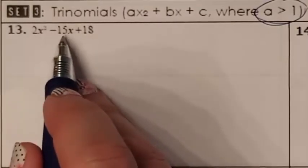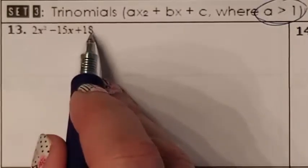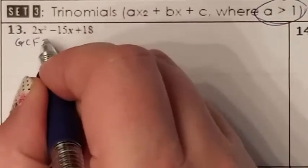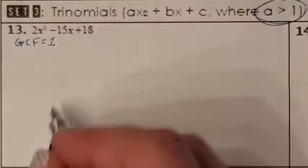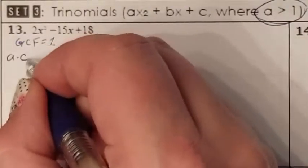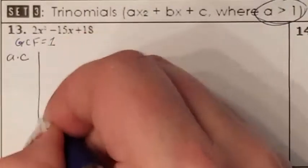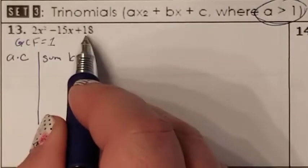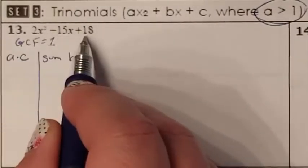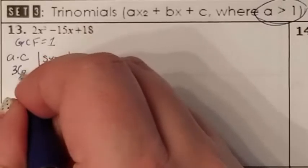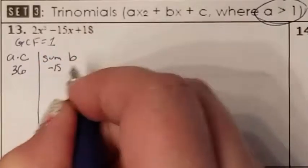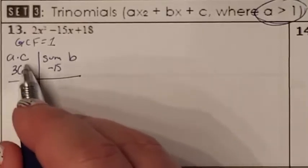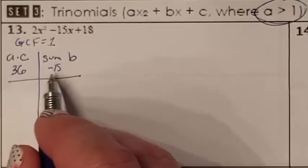Same thing — we always start with the GCF. I'm looking for common numbers or common variables. There are none, so I know that my GCF is 1. I now always start with A times C; somebody better add up to B. A times C is 2 times 18, which is 36. My B is negative 15. What two numbers multiply to give me 36 but when I add them, I get negative 15?